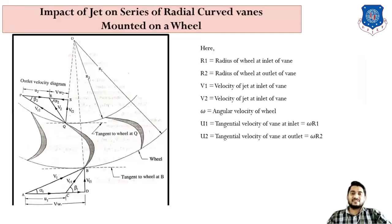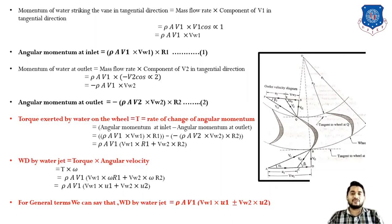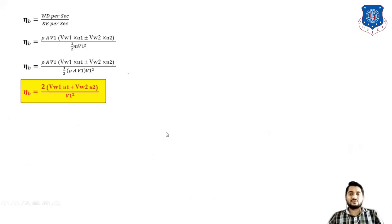To revise this theory: for rotating curved blades, r1 ≠ r2 so U1 ≠ U2. To find efficiency, we need work done per second. Unlike the earlier case where work done = force × velocity, here we use torque × angular velocity. Using the angular momentum equation, we find angular momentum at inlet and outlet, substitute into the torque equation, then compute work done per second. From work done, we derive the efficiency equation for curved vanes.